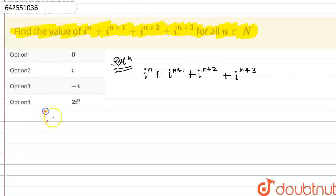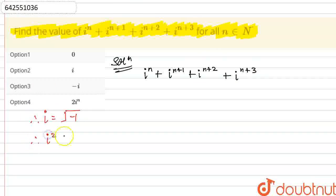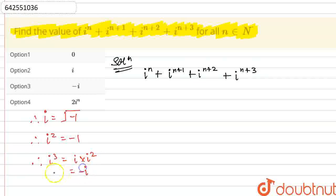Now we know that iota equals the square root of minus 1, which is a complex number, and iota squared equals minus 1. Similarly, iota cubed can be written as iota into iota squared; since iota squared is minus 1, we get iota cubed equals minus iota. This is what we'll use here.